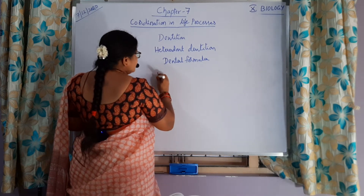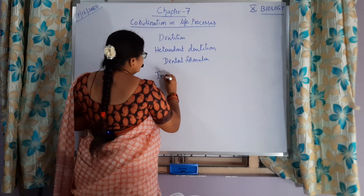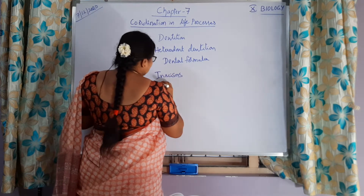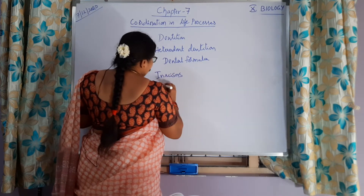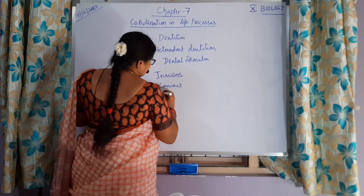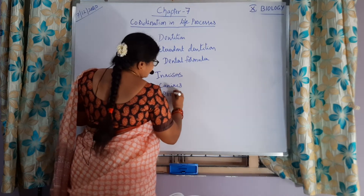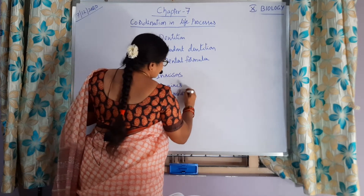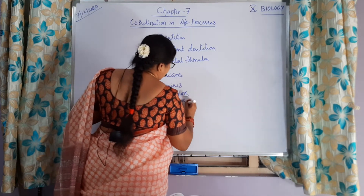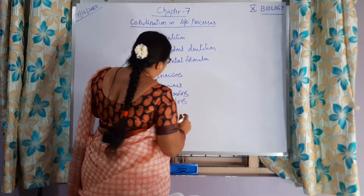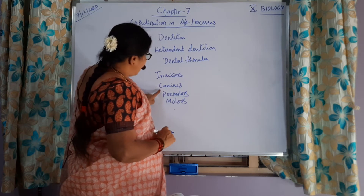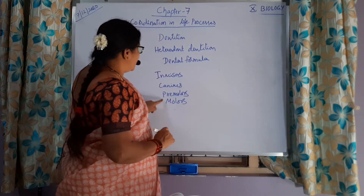How many types of teeth are there? We have four types of teeth: incisors, canines, premolars, and molars.